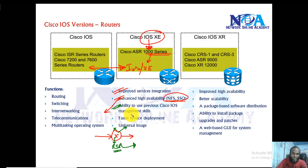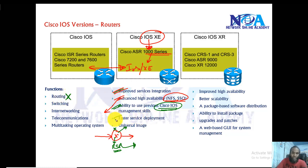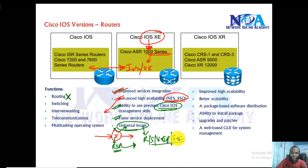IOS XE still uses the same skills since most commands look similar to standard Cisco IOS. Additionally, it adds benefits and features not present in standard IOS, deploys services faster, and uses a universal common image for routing, switching, VoIP applications, and security features — all on a single image.